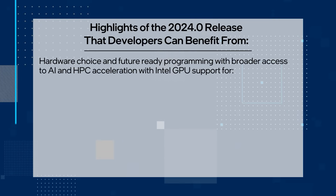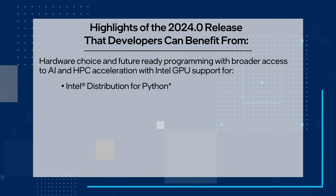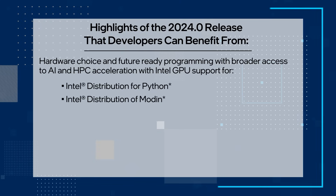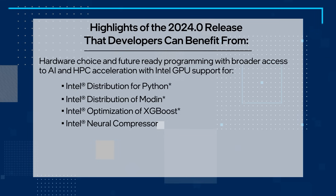First up, hardware choice and future-ready programming with broader access to AI and HPC acceleration with new Intel GPU support for Intel Distribution of Python, Intel Distribution of Modin, Intel Optimization of XGBoost, and Intel Neural Compressor.